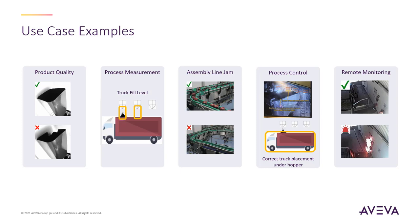Cameras can also be used in areas not suitable for humans because of security or safety concerns. In maintenance applications, we can deploy cameras that can be used to continuously monitor a certain section of the plant and provide early warnings days, weeks or months before failure — for example, overhead transportation using chains or carts.